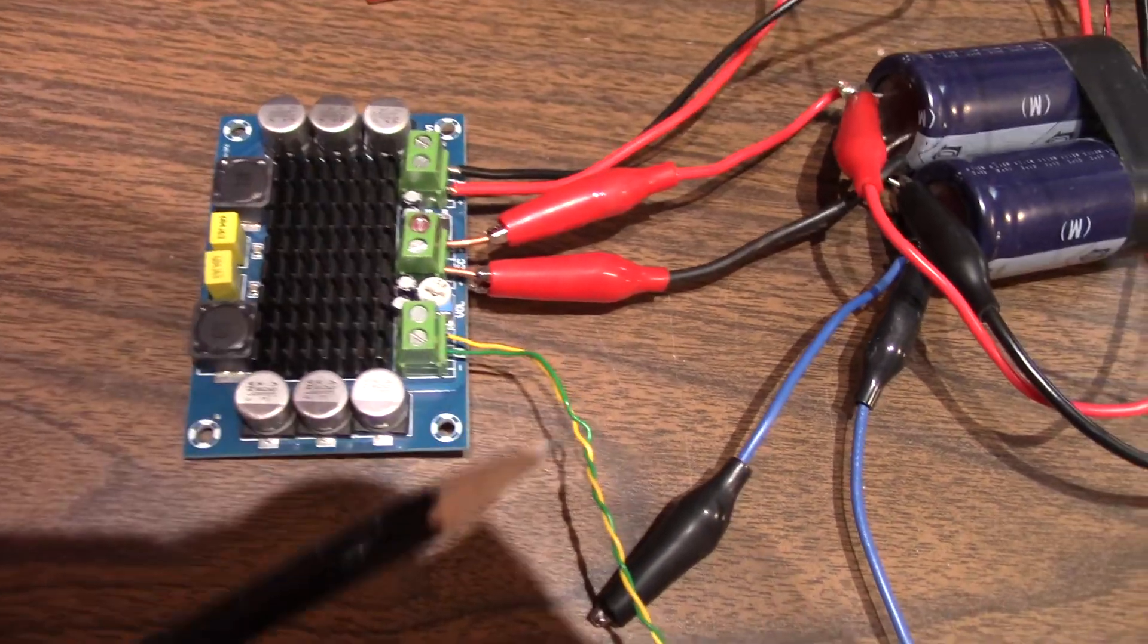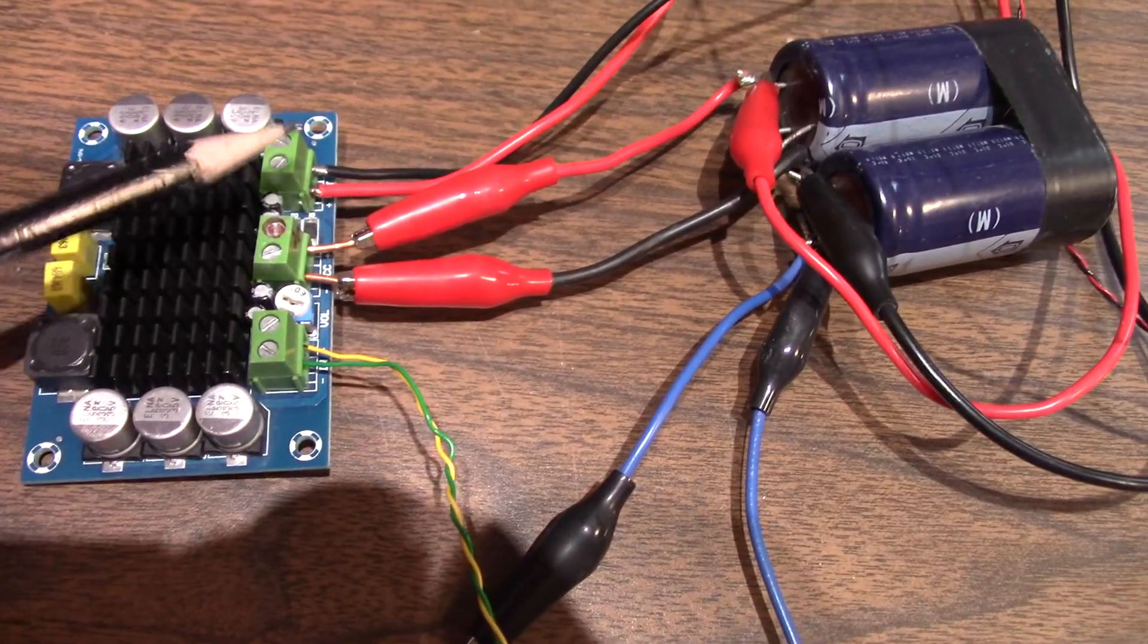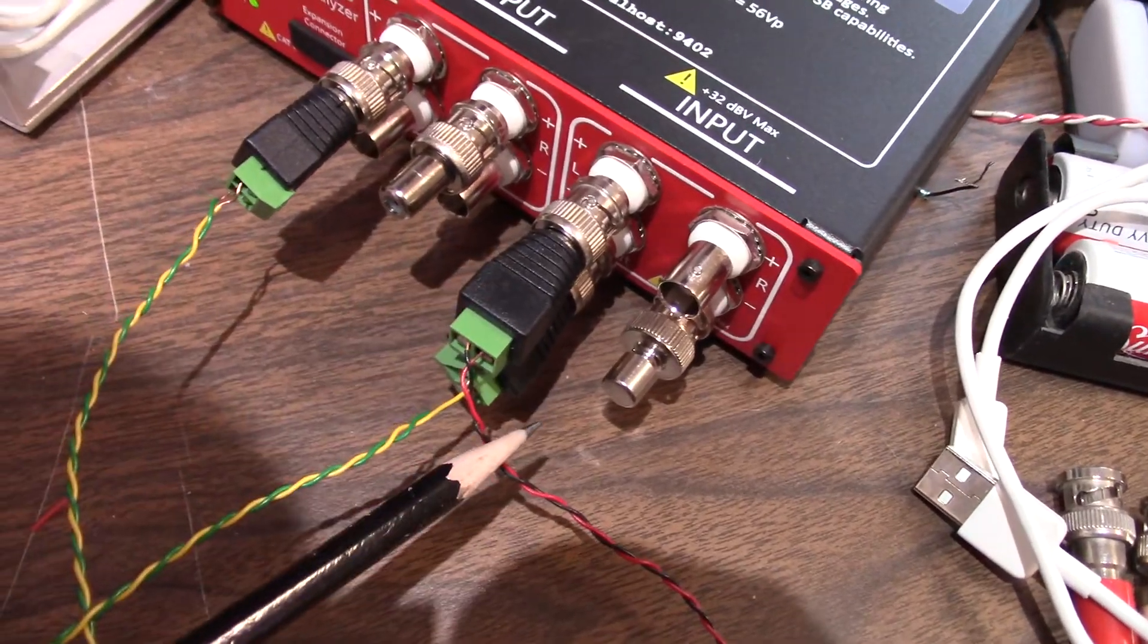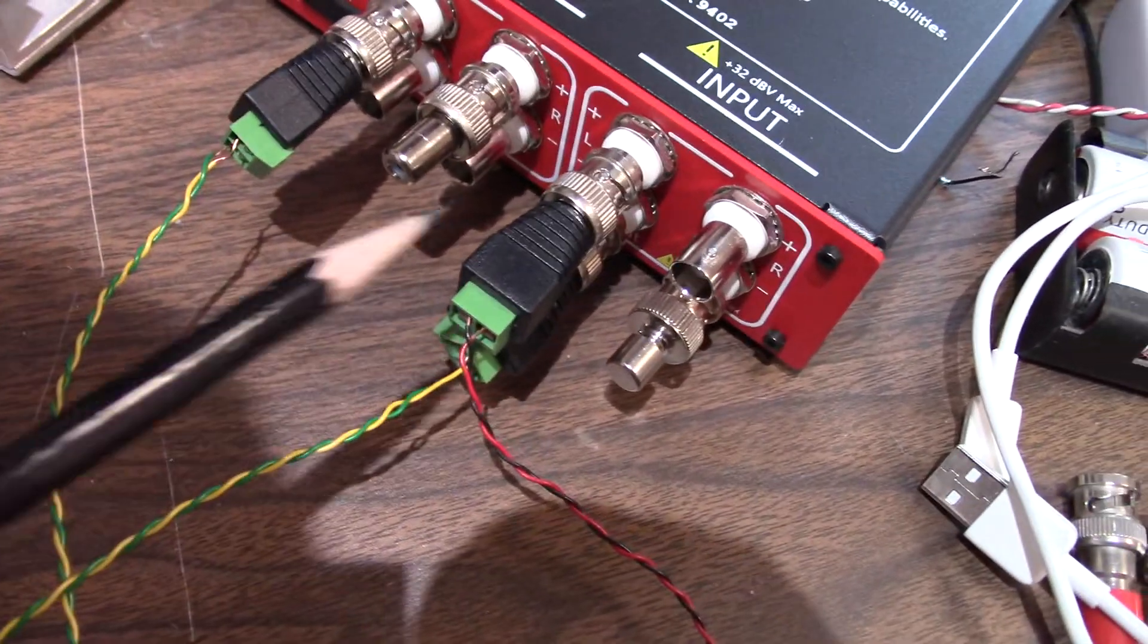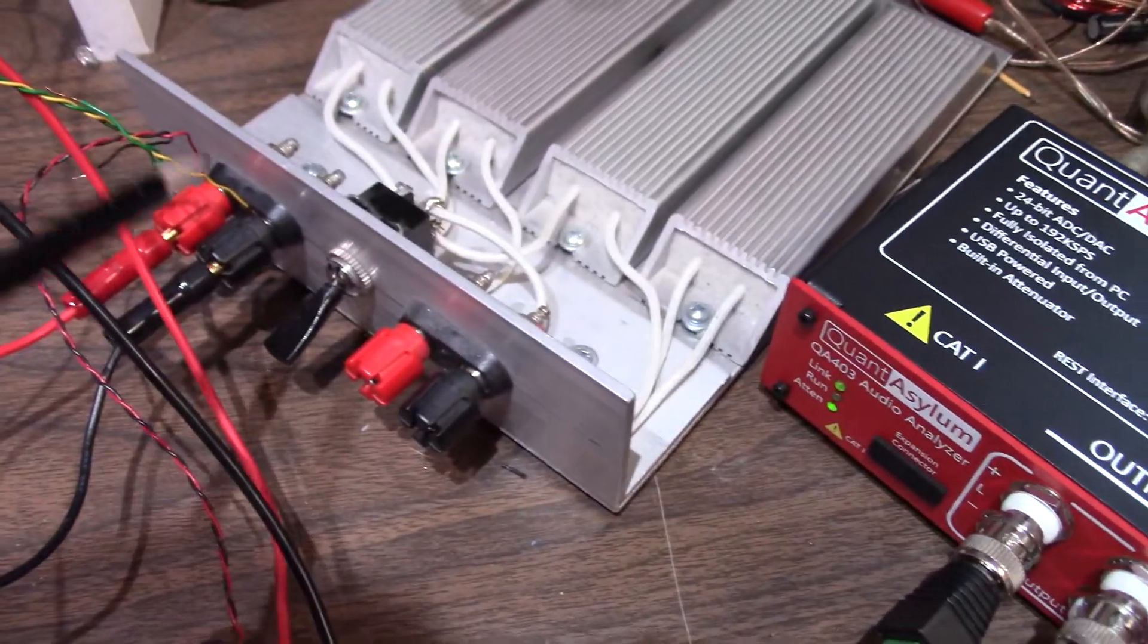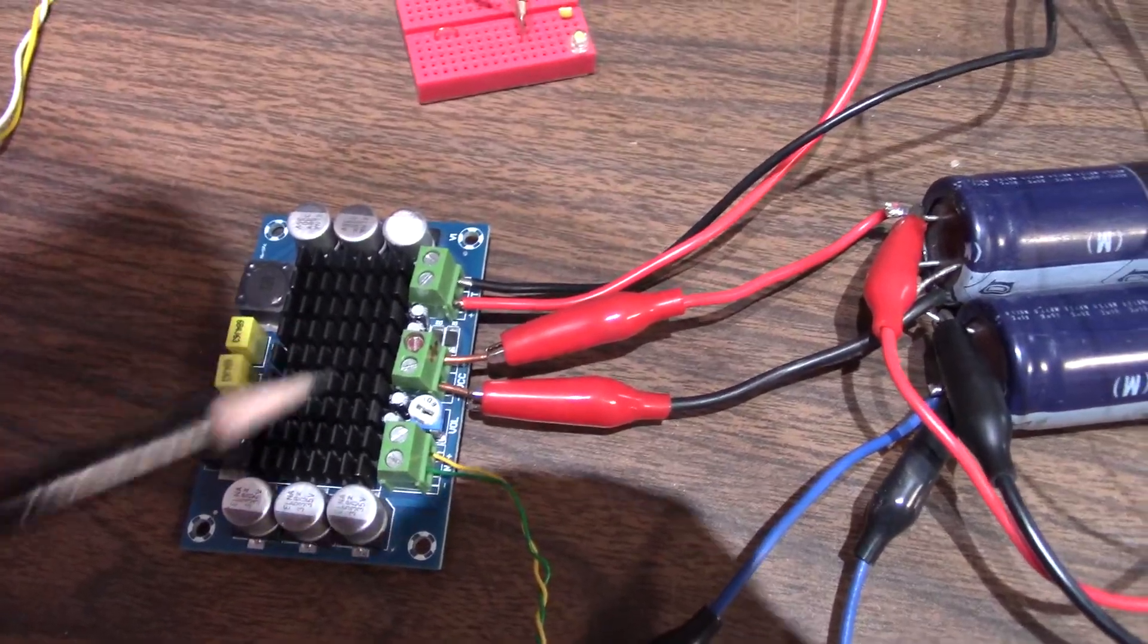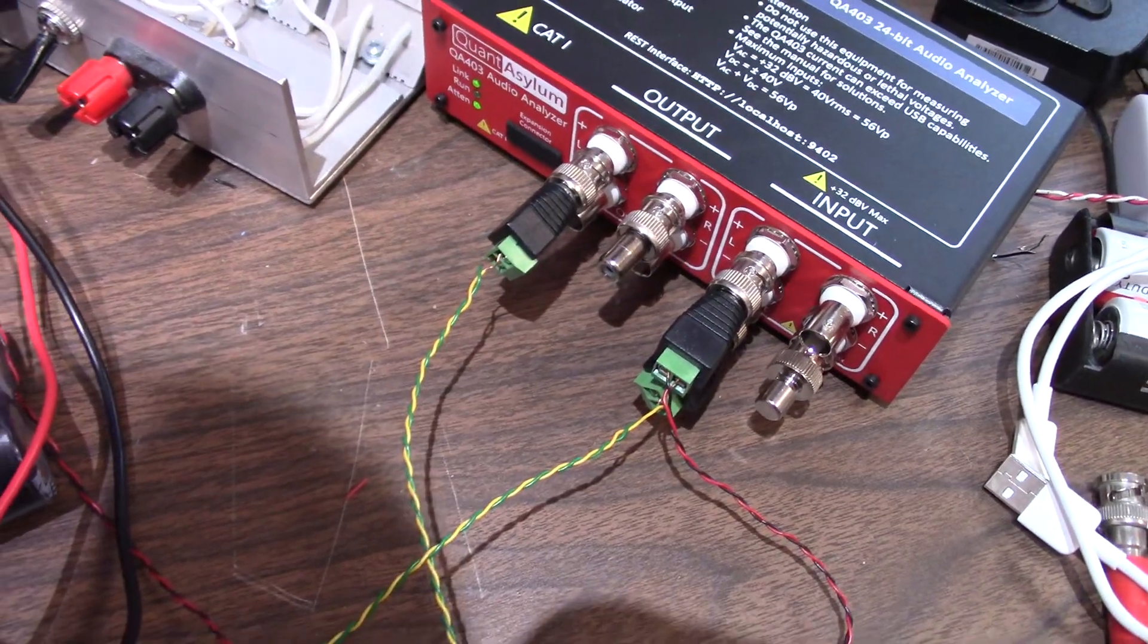Another thing I should mention - when you hook these up to test them, because the negative side of the input is grounded and the output is bridged, I have to use differential mode on the Quant Asylum and make sure I do not connect the ground lines. They can be used as shielding, but differential mode because if you tried to measure it single-endedly and grounded one side of the output, it would short out one side of the chip and damage it potentially. That's because it's a bridged output from the chip.